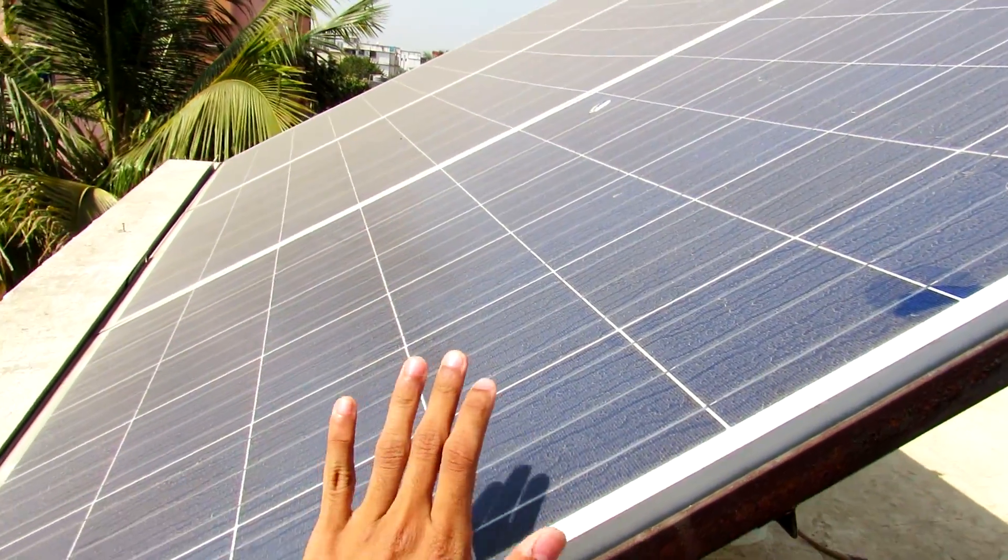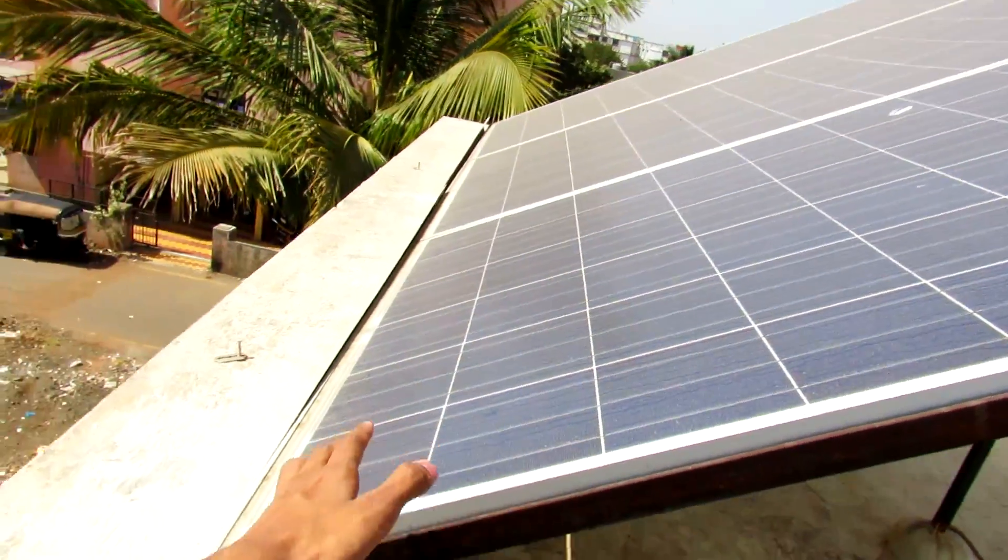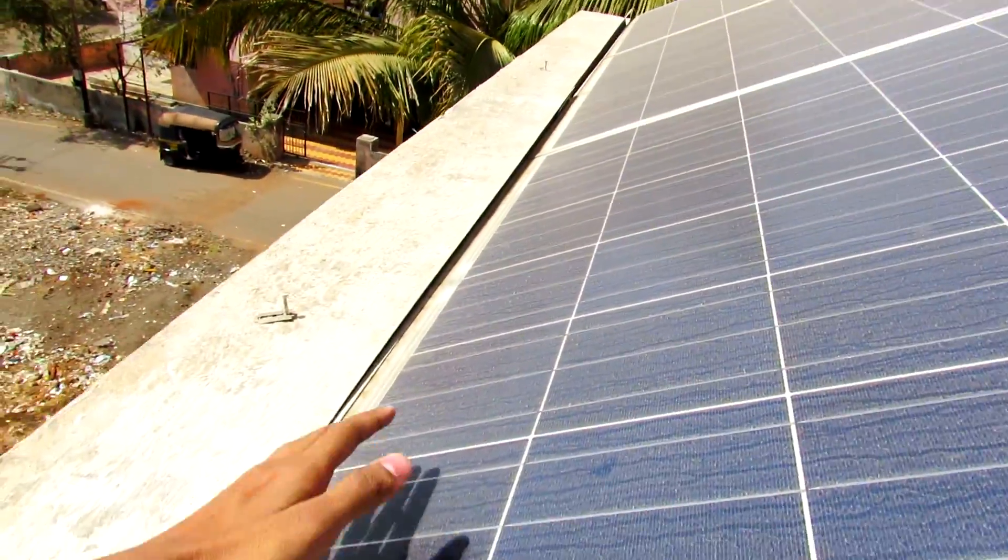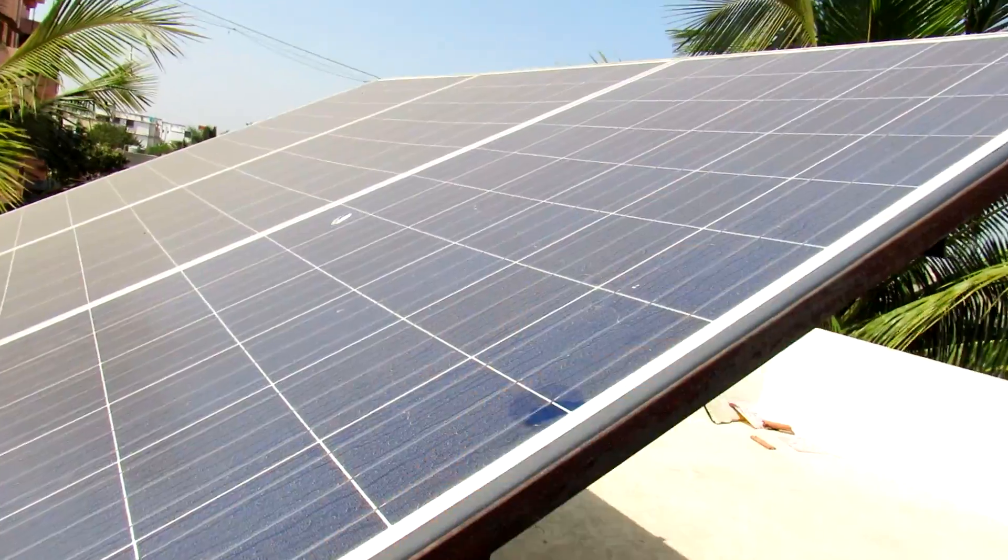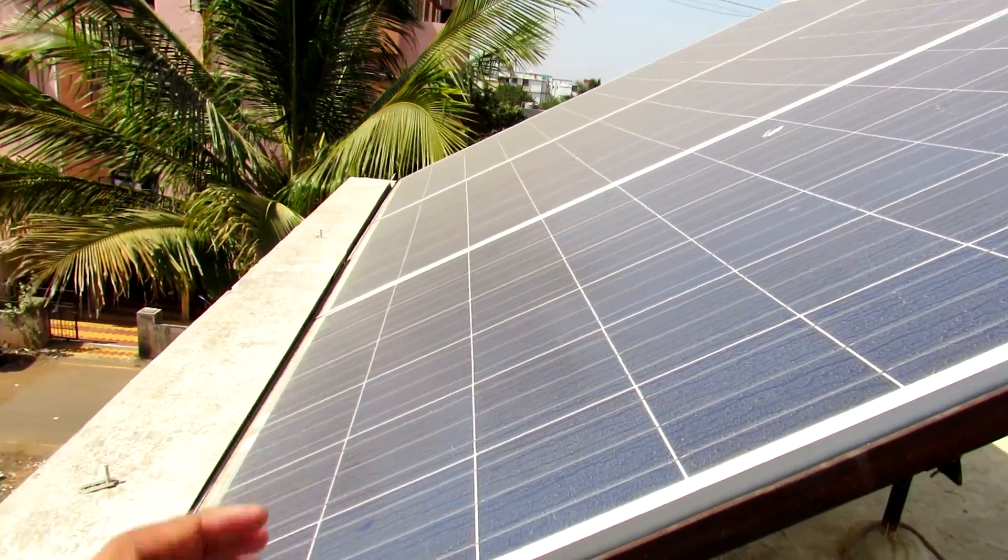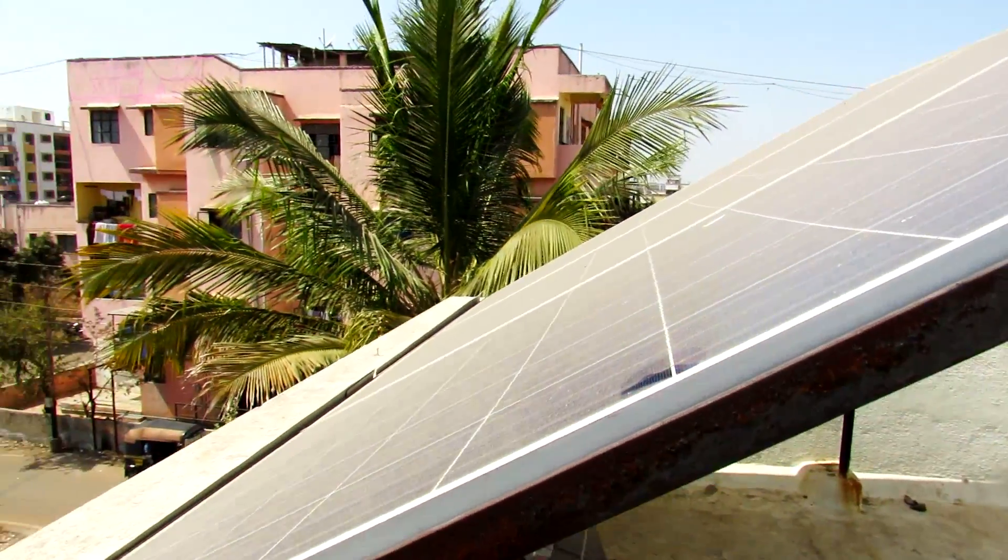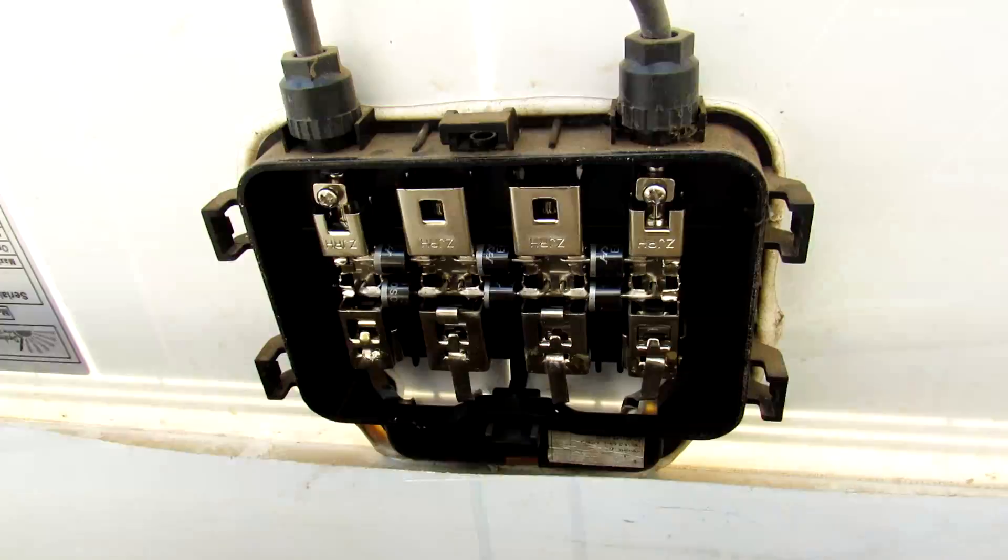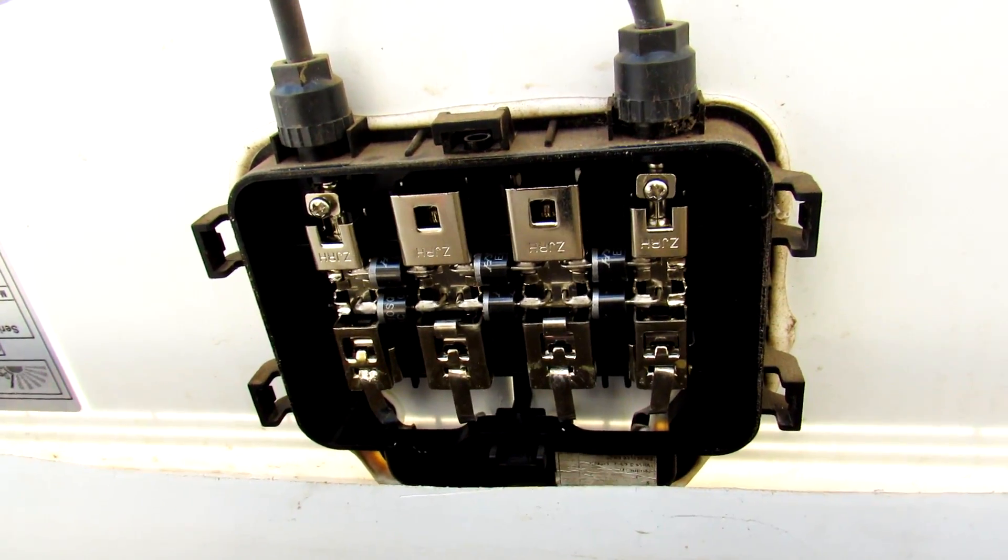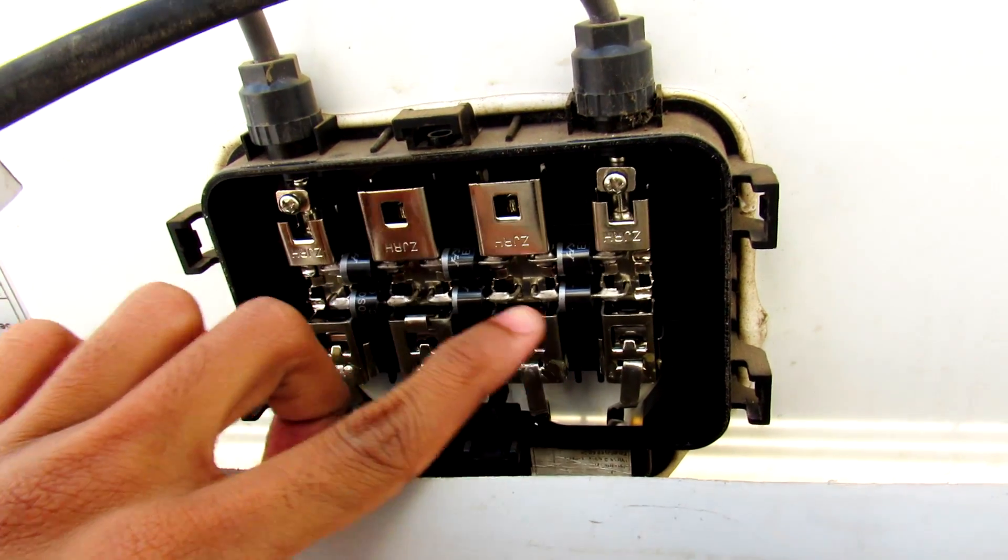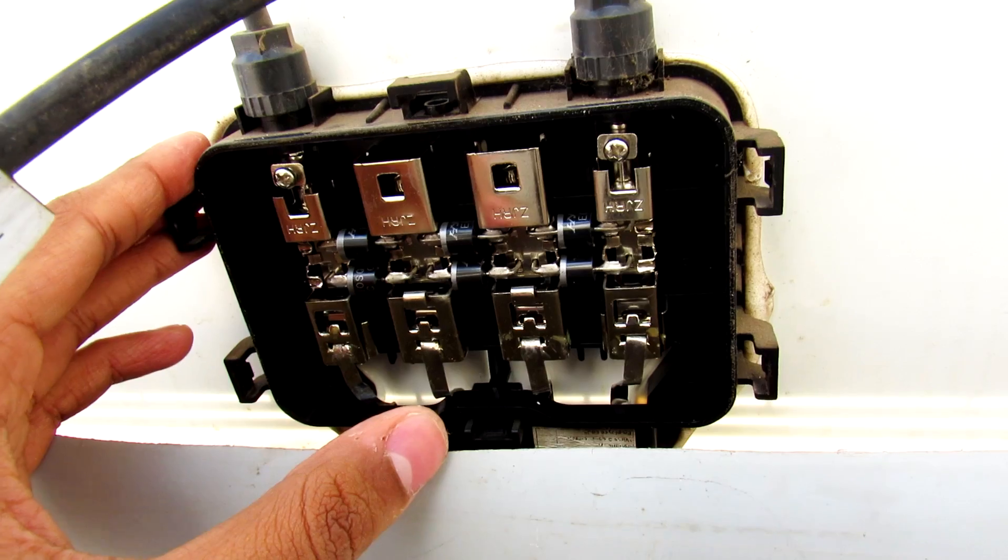And if you don't want to connect that much quantity of diodes to the solar panel, what you can do is select a string. So there are 6 strings going like this, so you can connect a diode for a string. So in the junction box, you can see the manufacturers actually connect 6 diodes to the panel.